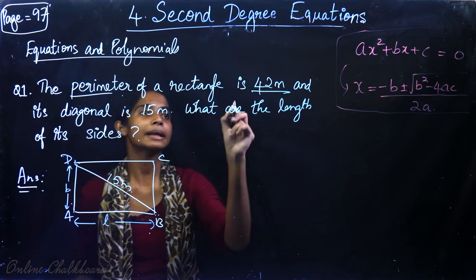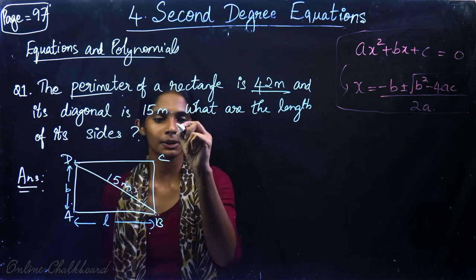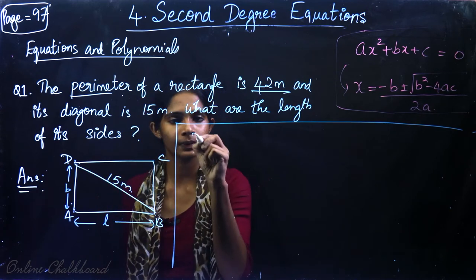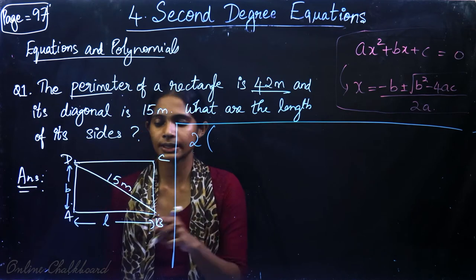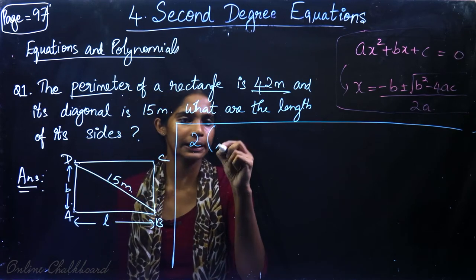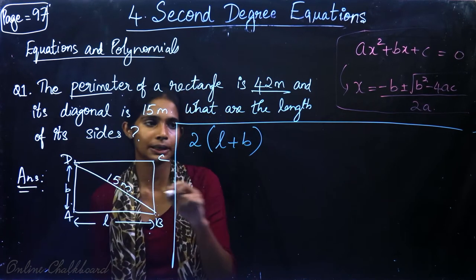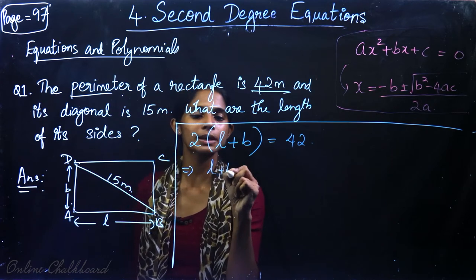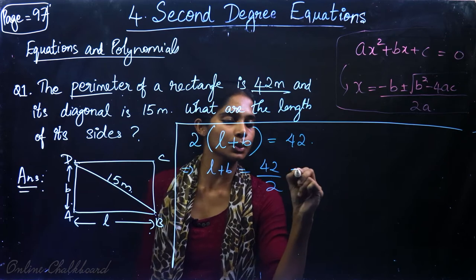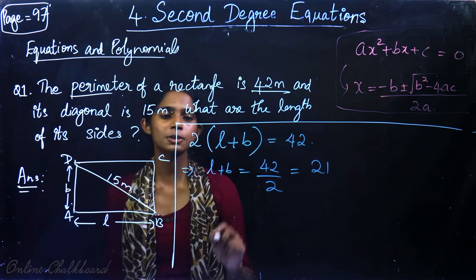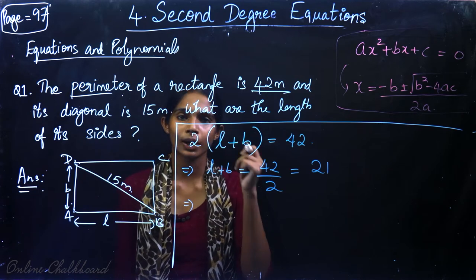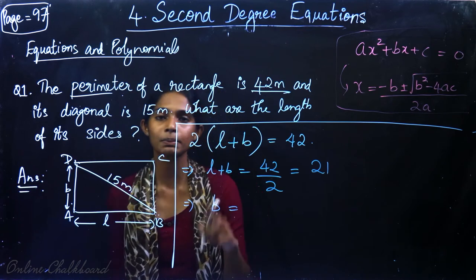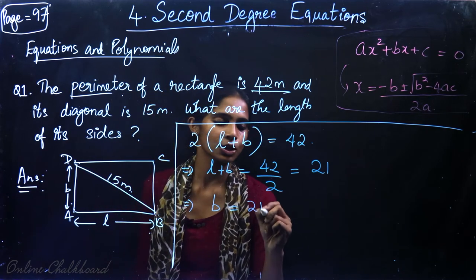We need to find the perimeter of 42 meters. What is the formula for the perimeter of a rectangle? It will be the sum of all four sides: length plus length plus breadth plus breadth, which goes directly to 2 into length plus breadth. So that is equal to 42. Therefore, l plus b is equal to 42 divided by 2, which is 21. L and b are two letters.